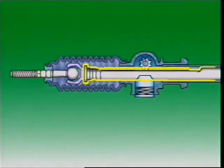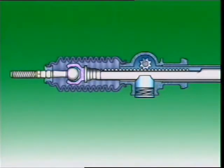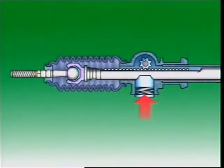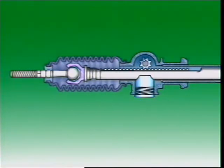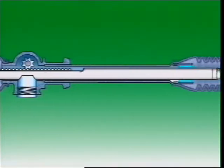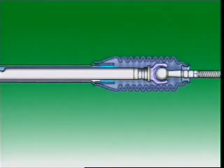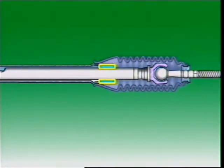The steering rack is supported at the pinion end by being sandwiched between the pinion and a spring-loaded rack guide yoke. This spring-loaded yoke ensures free play is eliminated between the gears while still allowing for relative movement. The rack is supported at the other end in the rack housing, or tube, by a bush, normally of nylon.